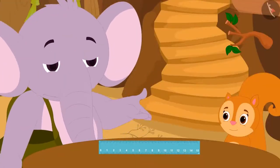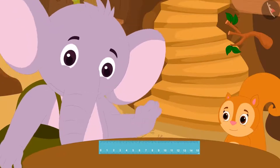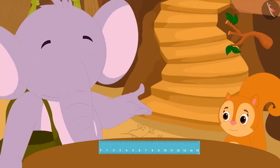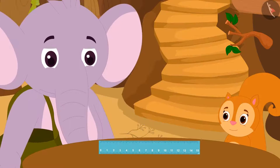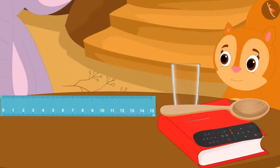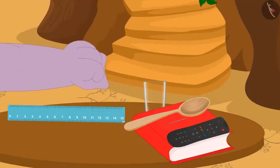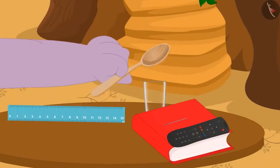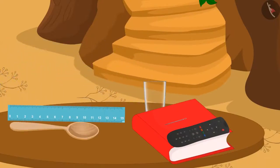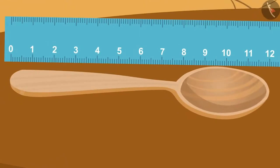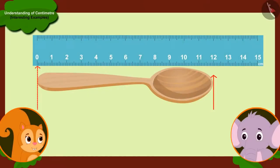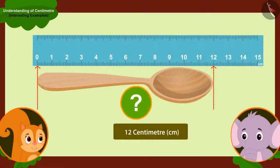Appu then asked Chanda to collect some items from her house whose length she wanted to measure. Chanda immediately collected those items and brought them. Appu first picked up a spoon of Chanda. He placed the spoon next to the ruler in this way and said, Look, your spoon is twelve centimetres long.